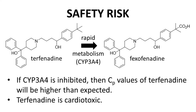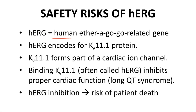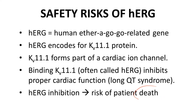The risks of terfenadine slipped through preclinical safety because this exact situation had not been recognized as a safety concern. The risks involve HERG. HERG stands for Human Ether-a-go-go-Related Gene, and HERG encodes a protein, KV11.1, that is part of a critical potassium ion channel in the heart. While arguably inaccurate, people often call the ion channel protein HERG, although HERG is technically the gene that encodes the protein. Regardless, inhibition of this ion channel affects the proper function of the heart and therefore can lead to patient death — this was the problem with terfenadine.